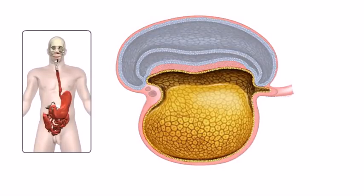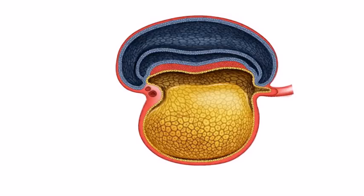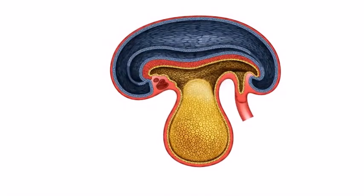The endoderm of the trilaminar disc is mainly responsible for the formation of the gastrointestinal tract. As embryonic folding continues, the endoderm moves towards the midline and fuses,